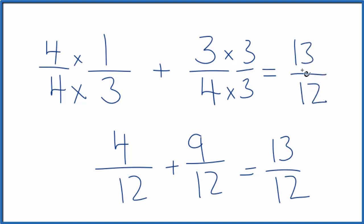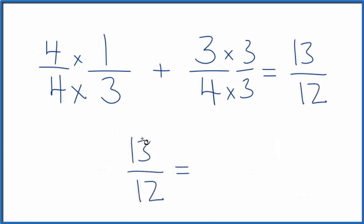This is an improper fraction, the 13 is bigger than the 12. Let's also change this to a mixed fraction. So 13, 12 goes into 13 one time with 1 left over. So 1 and 1/12, that's the same as 13/12.